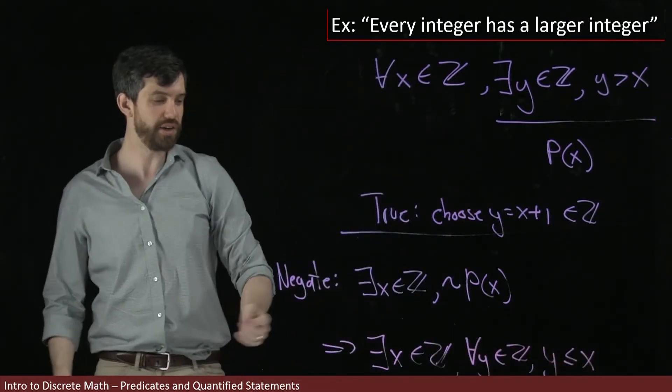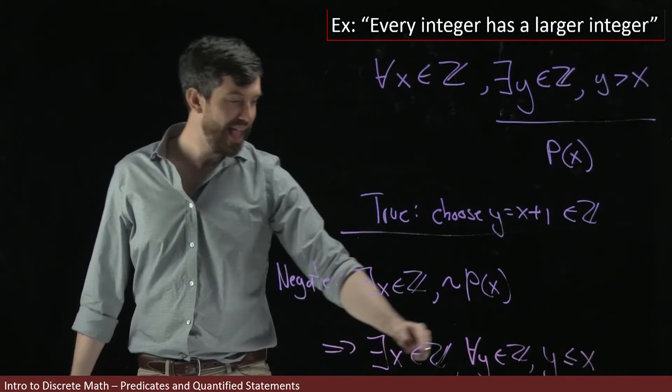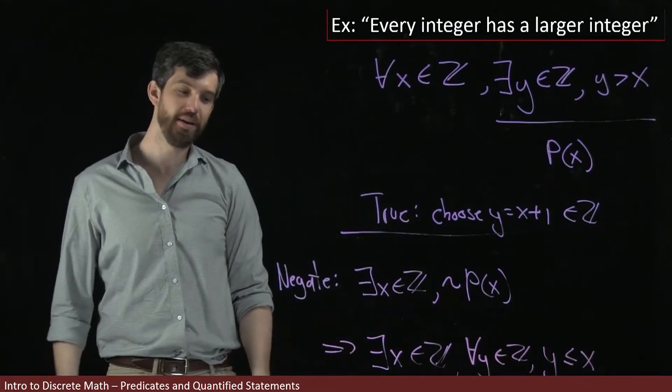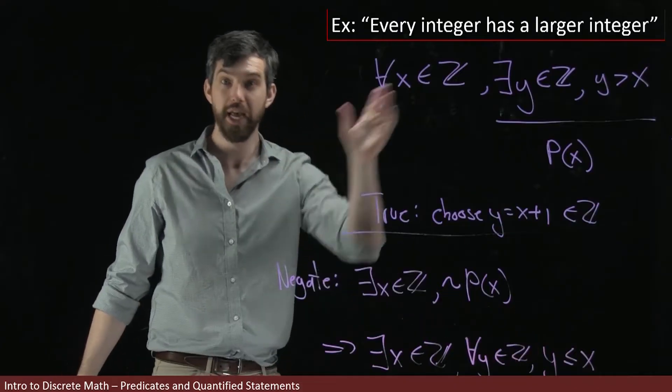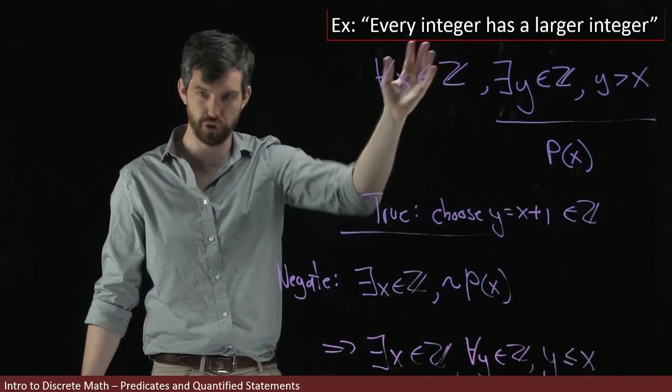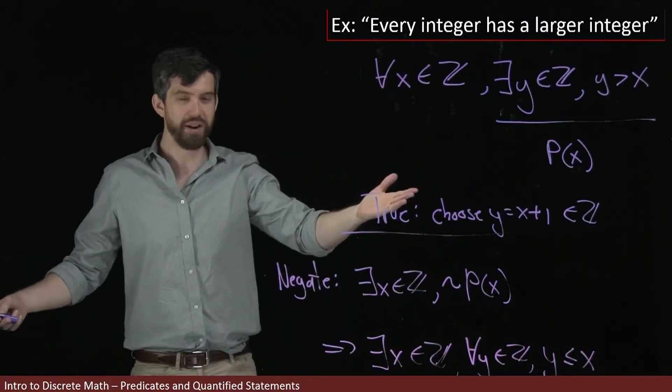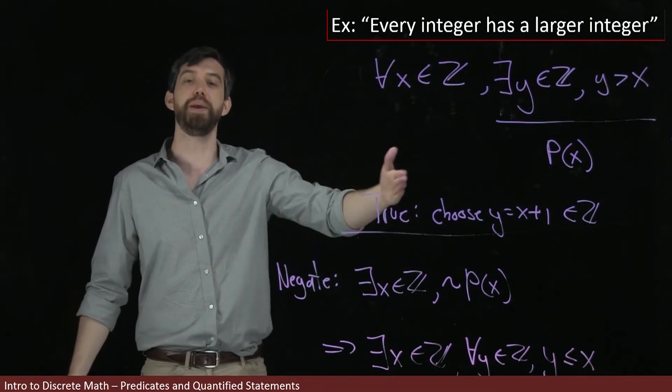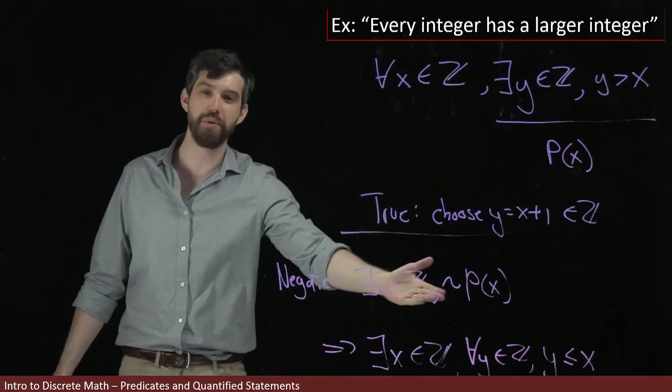So the statement is there's some number such that every single y is smaller than it. But this is nonsense in this case. This claim is false, which is good because the original claim was true and a negation takes a true claim to a false one. The reason is there's no number that's bigger than everything else. In the integers, they keep getting bigger forever. There is no biggest number.